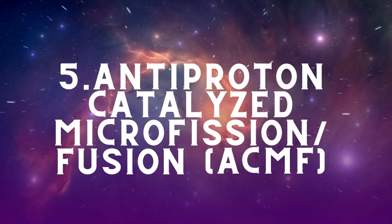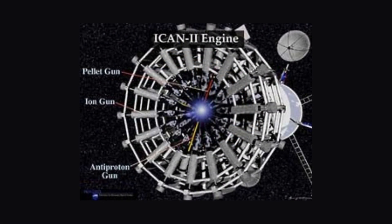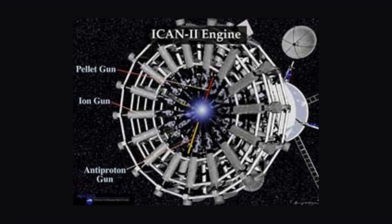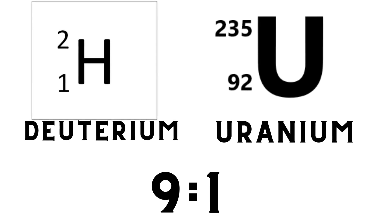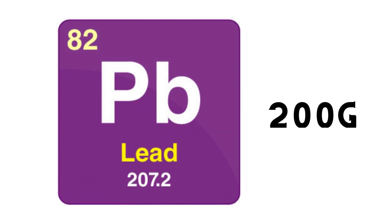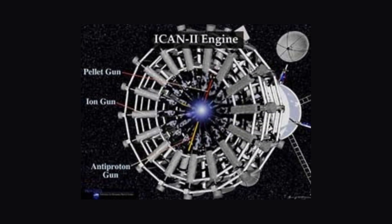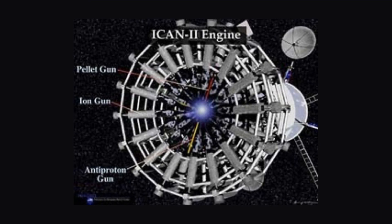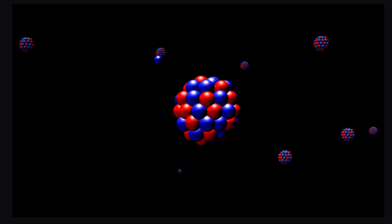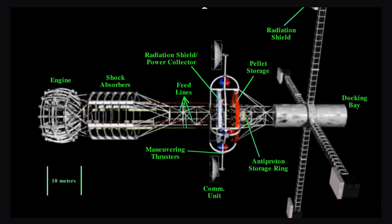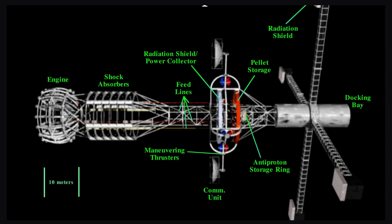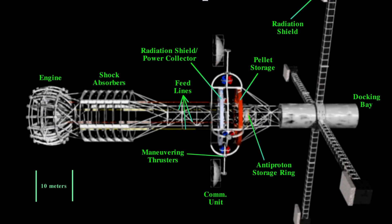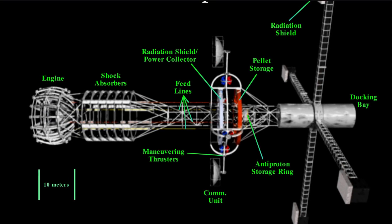The antiproton-catalyzed micro fission/fusion engine is quite interesting, involving both antimatter annihilation and nuclear reactions. Spherical fuel pellets of deuterium and uranium-235 in a 90-to-1 molar ratio are coated with 200 grams of lead and radially compressed with ion drivers. A 2-nanosecond pulse of 10¹¹ antiprotons initiates fission in the uranium-235; the high-energy fission products rapidly heat the target and initiate deuterium-deuterium fusion, releasing 300 gigajoules of energy. This energy generates thrust by directing resulting high-energy particles through a nozzle, while the lead re-radiates 1 keV photons that ablate silicon carbide to produce additional thrust.